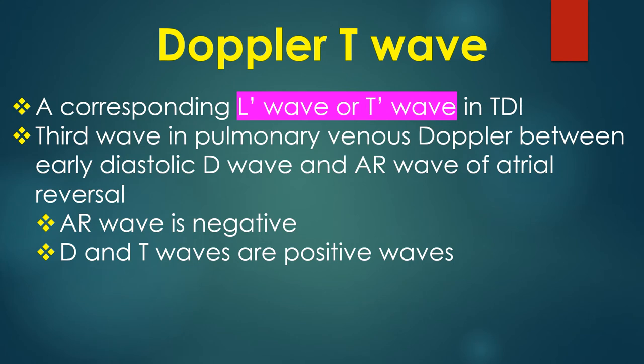A corresponding L prime wave or T prime wave in tissue Doppler has also been described. A third wave has also been documented in pulmonary venous Doppler, in which the T wave is positioned between the early diastolic D wave and the AR or atrial reversal wave. The AR wave is negative, while the D and T waves of pulmonary venous Doppler are positive waves.